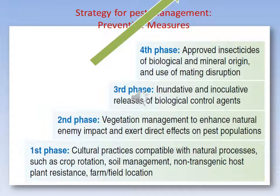Strategies of pest management. In the first phase, adopt cultural practices compatible with natural processes such as crop rotation, soil management, non-transgenic host plant resistance, and farm field location. The second phase is vegetation management to enhance natural enemy impact and exert direct effects on the pest population. The third phase is inundative and inoculative releases of biological control agents. The fourth phase includes approved insecticides of biological and mineral origin and mating disruption techniques. Only if all these fail should we opt for chemical management using pesticides.